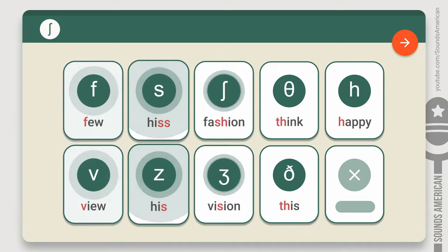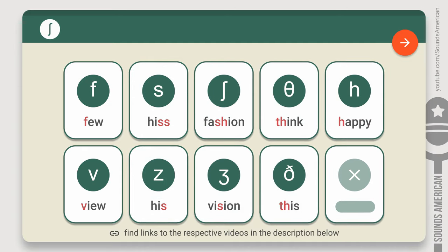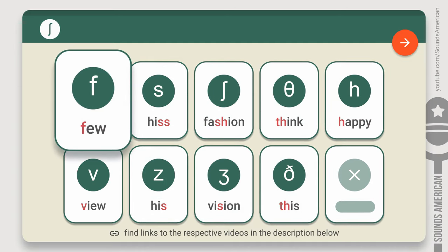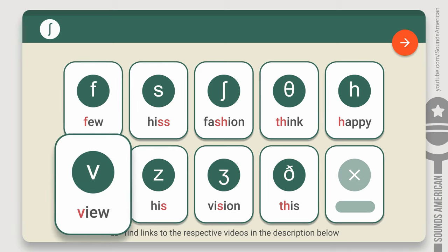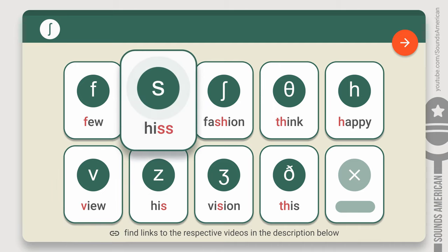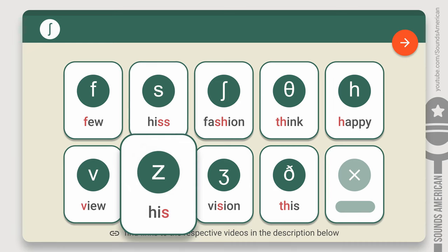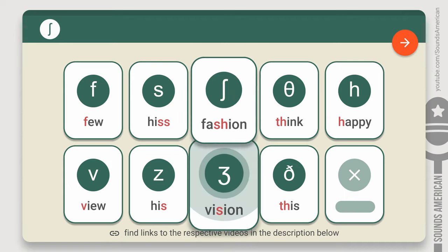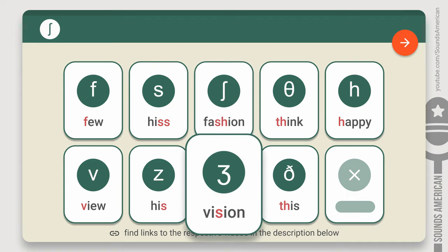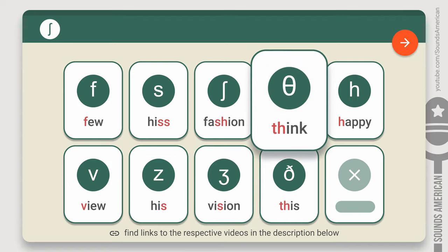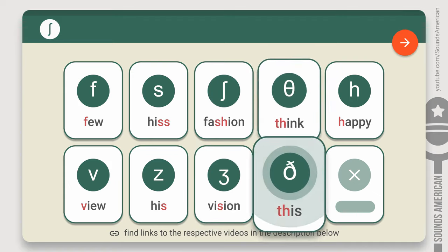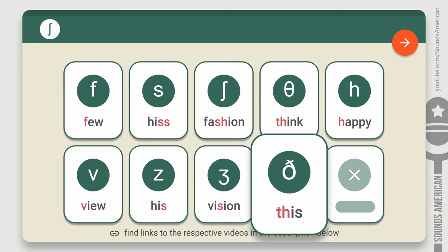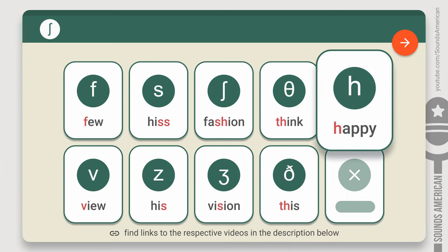It consists of nine different sounds. Take a look: F as in 'few', V as in 'view', S as in 'hiss', Z as in 'his', SH as in 'fashion', ZH as in 'vision', TH as in 'think', DH as in 'this', and H as in 'happy'.